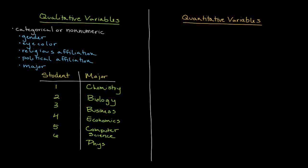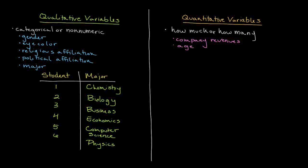A quantitative variable works in a very similar fashion, with the exception that we're focusing on how much or how many of something. Common examples of quantitative variables include company revenues on an income statement, the age of employees, salary of employees, and even IQ. Quantitative variables can fall into two specific categories: discrete variables or continuous variables.